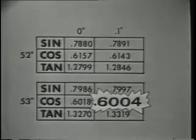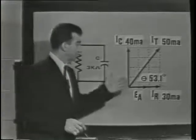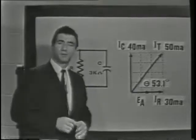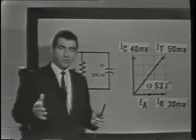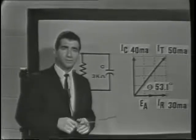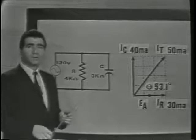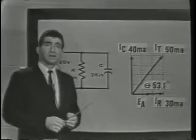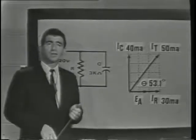If we wish to use the cosine to find angle theta in this circuit, the formula cosine equals the adjacent over the hypotenuse, or IR over IT, which would be 30 milliamps over 50 milliamps, and the cosine of angle theta would equal 0.6. Going to the trig tables and finding the cosine nearest 0.6, which is 0.6004, we see the angle is 53.1 degrees. The procedure is very simple and very accurate.